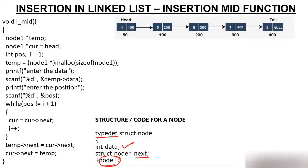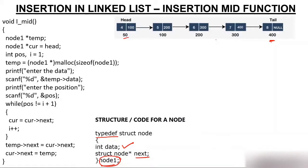We already have a linked list with 5 nodes where head is pointing to the element having value 4 (address 50) and tail points to the element having value 8 (address 400). Suppose we have to insert a node at the 4th position — after 6, we want to insert the value 15. The output should be: 4, 5, 6, 15, 7, 8. To do this, we first create a node using malloc and ask the user for the position.